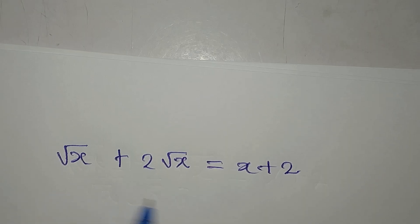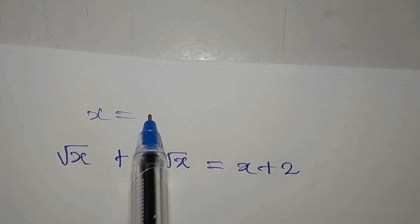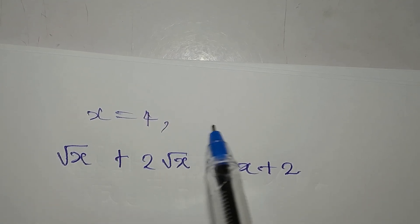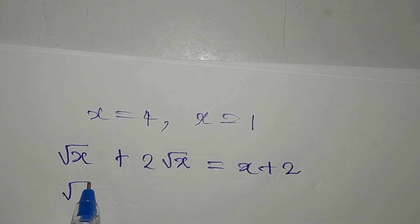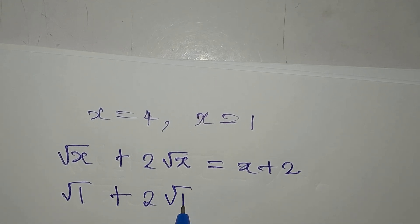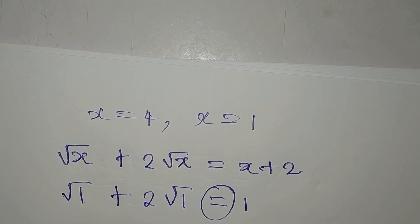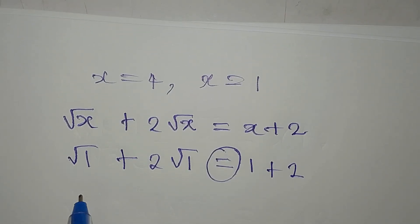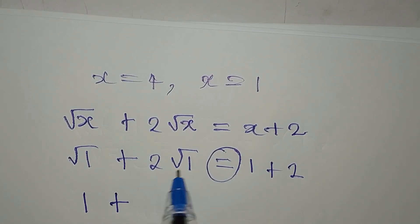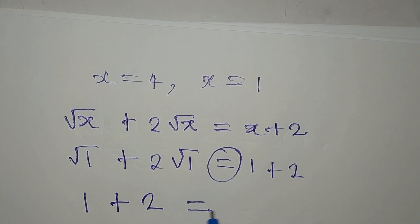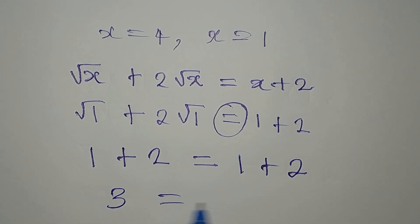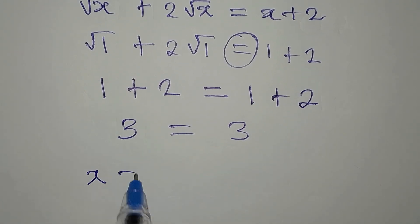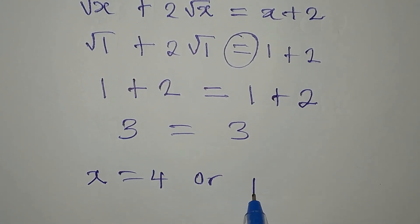Now verifying x equals 1: square root of 1 plus 2 times square root of 1 equals 1 plus 2 times 1 equals 1 plus 2 equals 3. On the right side, 1 plus 2 equals 3. Both sides equal 3, so x equals 1 also satisfies the equation.